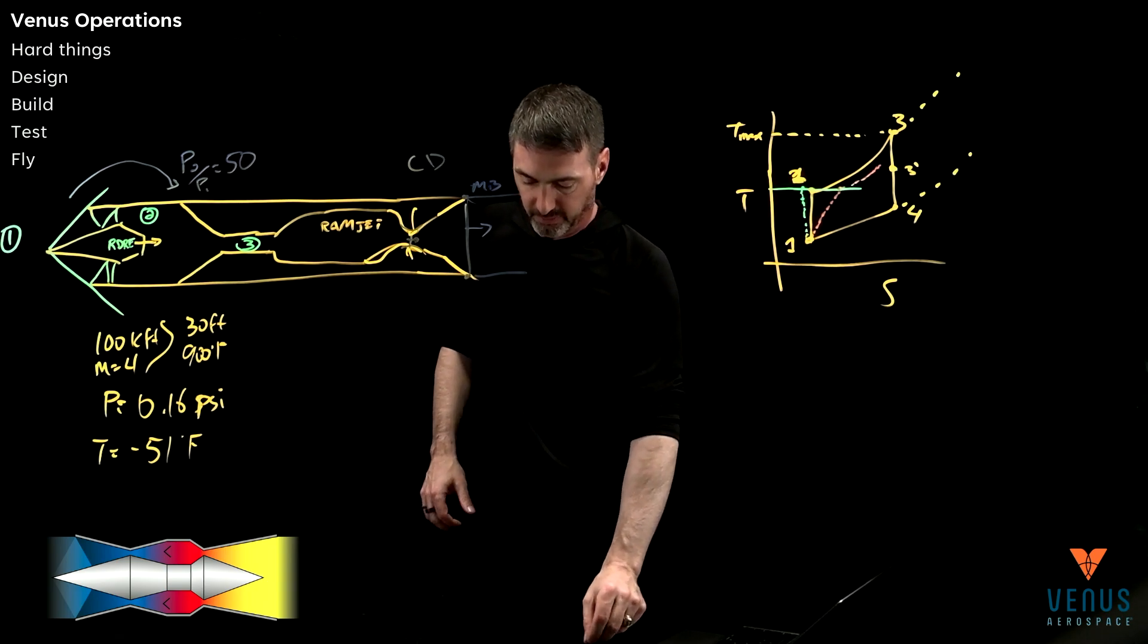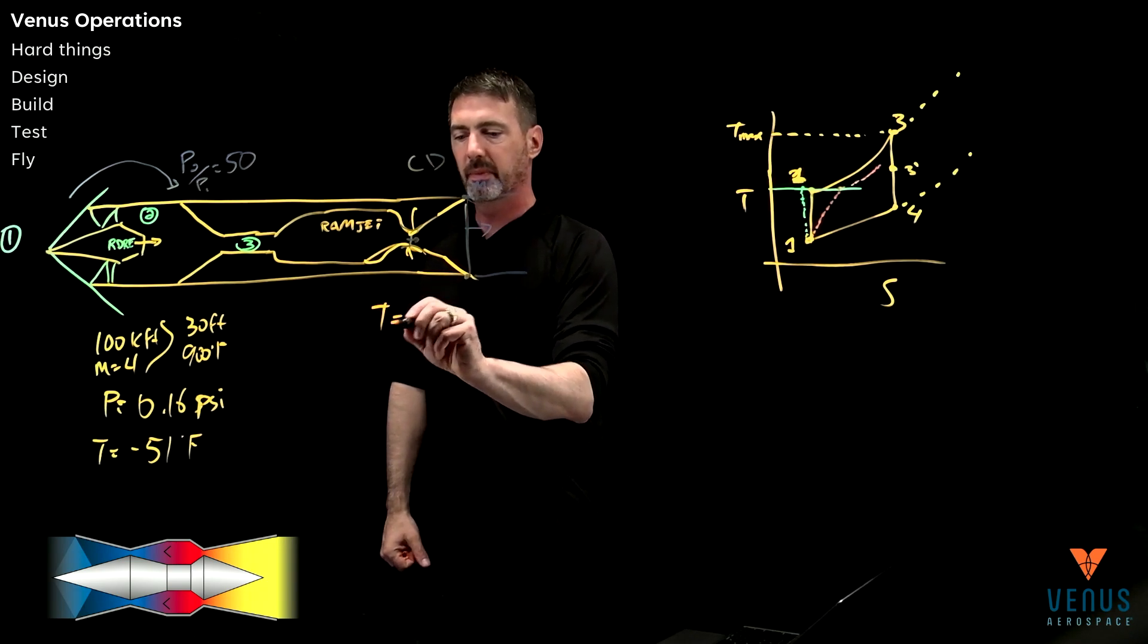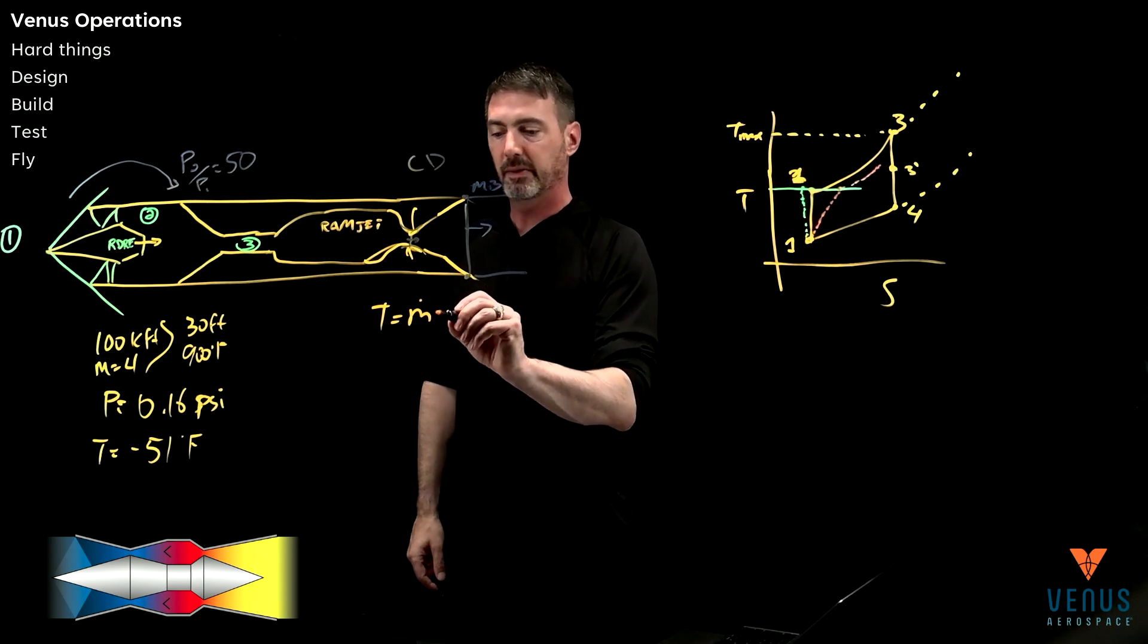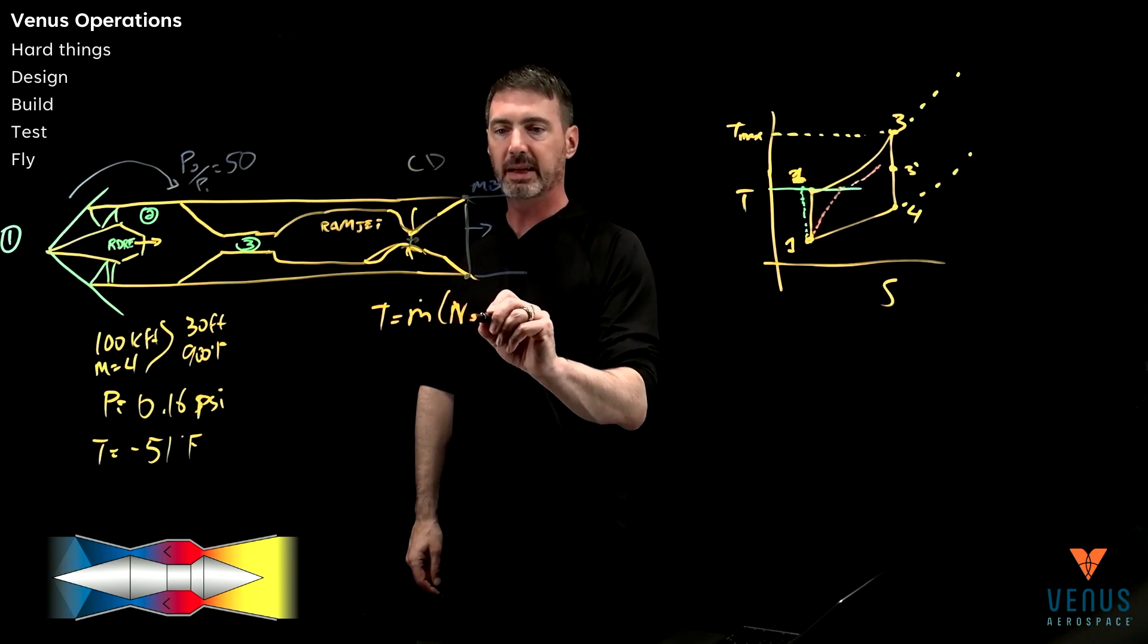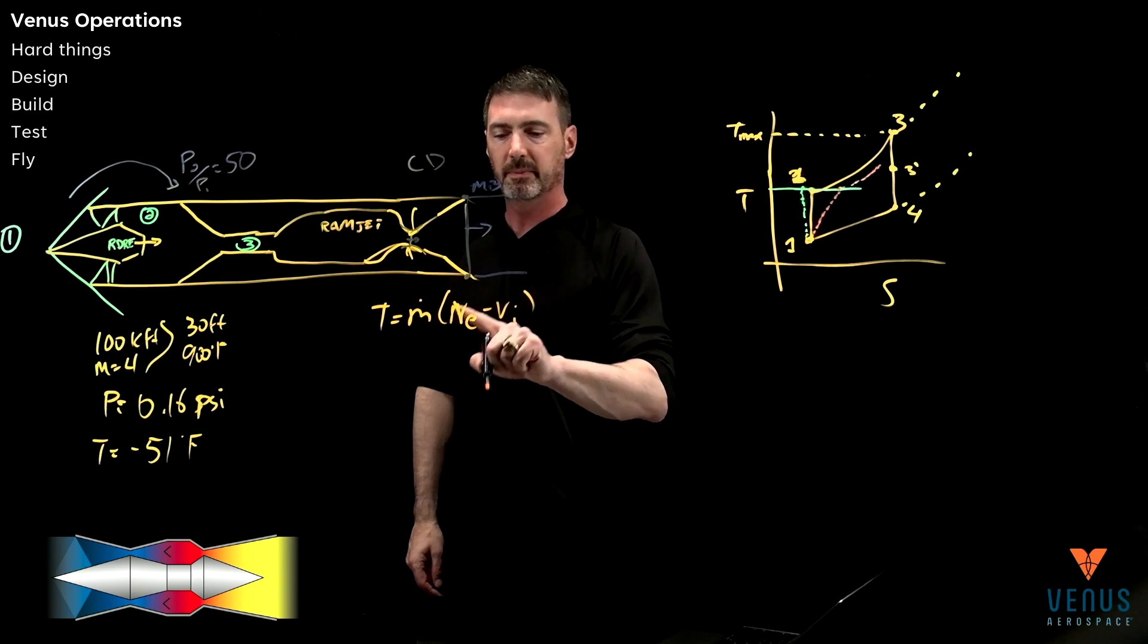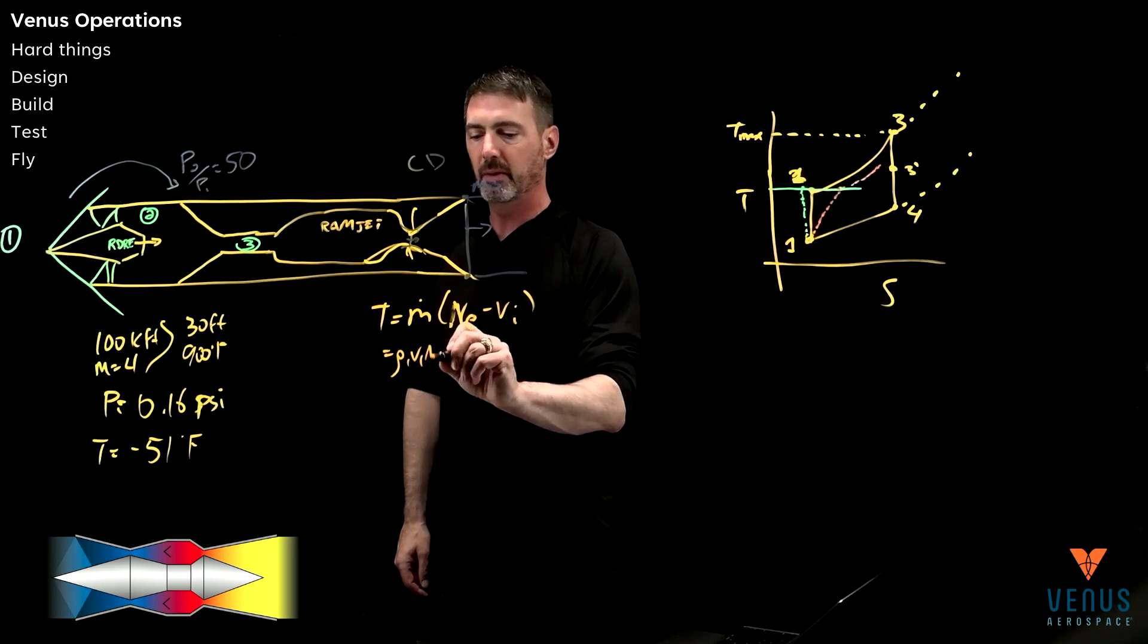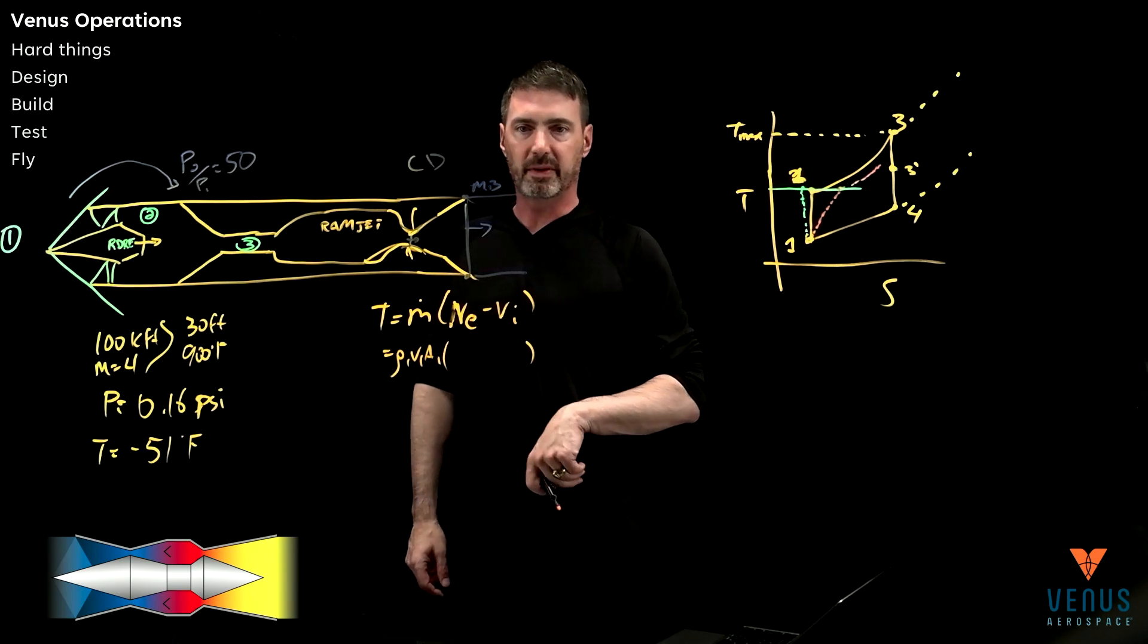Okay. And then the final thought here is just to remember that the thrust in the end, whatever the mass flow is, which is really set by the area upfront. And so, it is mass flow V_exit minus V_in. And again, that mass flow rate is ρ₁ V₁ A₁. It's that capture area and then times that difference.